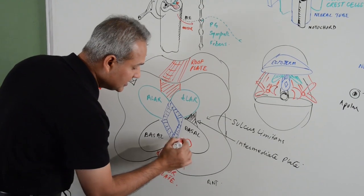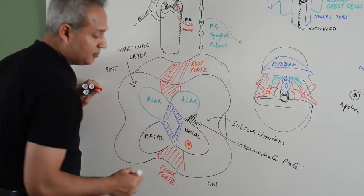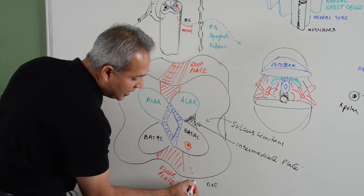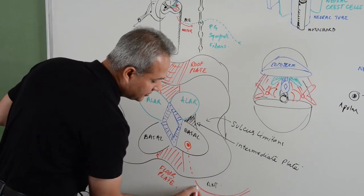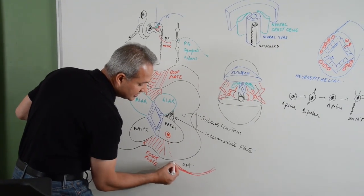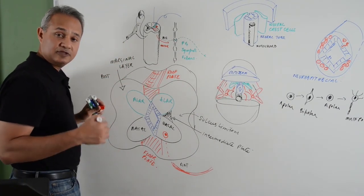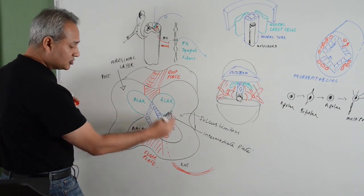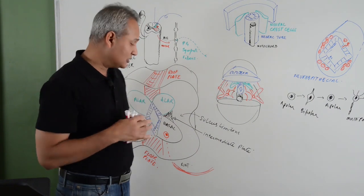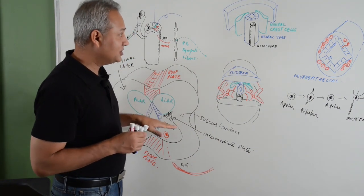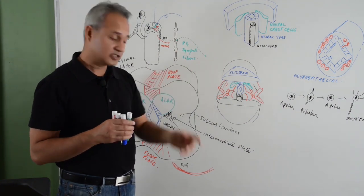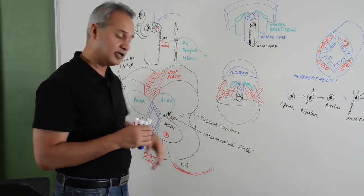Let us talk about the motor neuron first. A motor neuron develops its axon, which comes out from the anterior side. In most cases it will also be myelinated by Schwann cells. Schwann cells are also going to originate here, but not from inside the neural tube — their origin is from the neural crest cells. So neural crest cells give rise to the Schwann cells that myelinate the motor axon. That is the motor fiber.